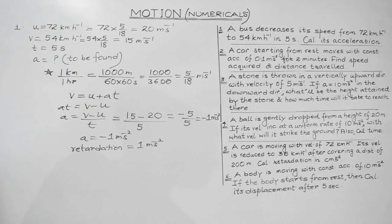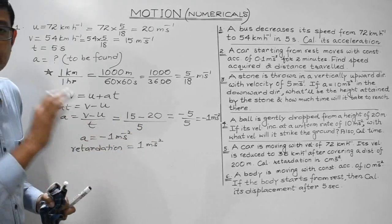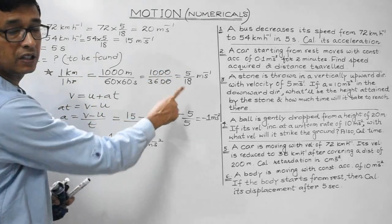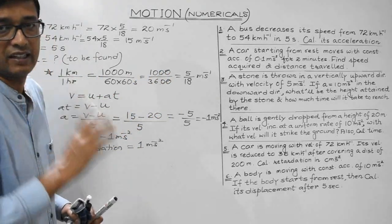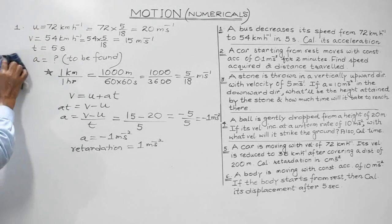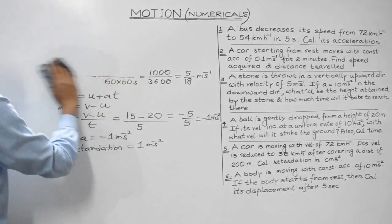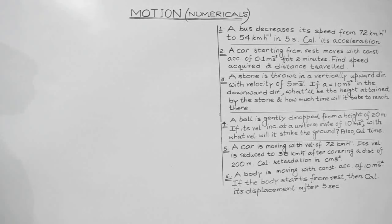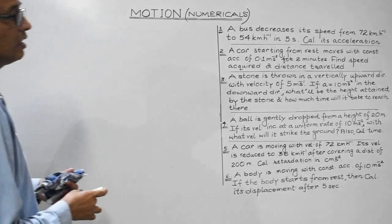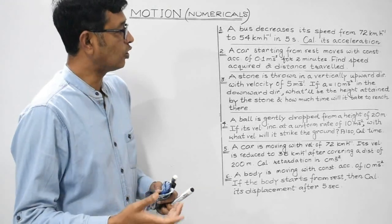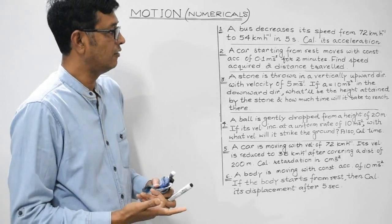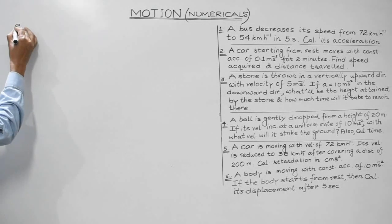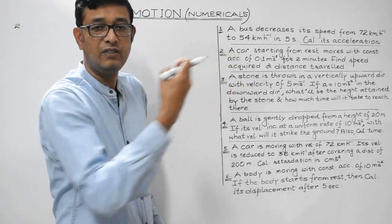That is the solution to the first question. The first step is to convert km/h to m/s, remembering that 1 km/h = 5/18 m/s. Now let's discuss the second question: a car starting from rest moves with constant acceleration of 0.1 m/s² for 2 minutes. Find the speed acquired and the distance travelled.